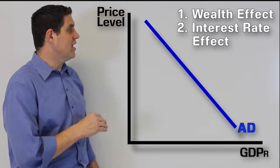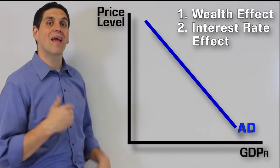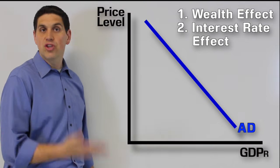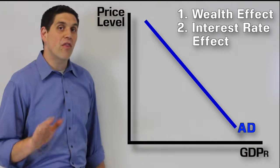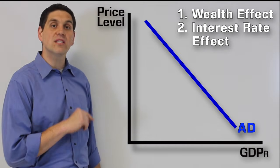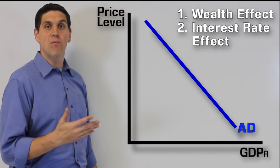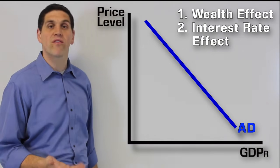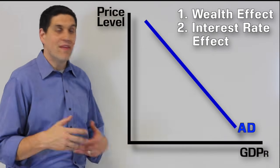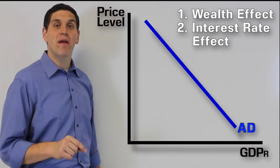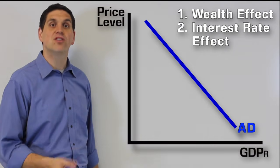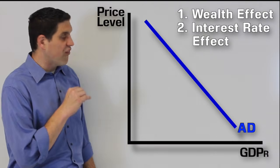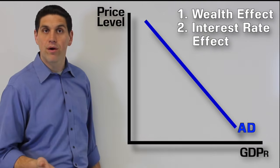The interest rate effect is the idea that if the price level goes up, there are going to be higher interest rates. And with higher interest rates, consumption and investment will decrease. The reason why interest rates go up when price level goes up is because people need more money to buy things, so they're going to borrow more or liquidize more of their assets — they need more cash. This leaves less money to loan out to other people, and so interest rates go up. When price level goes down, interest rates will fall, and so people will go buy more.